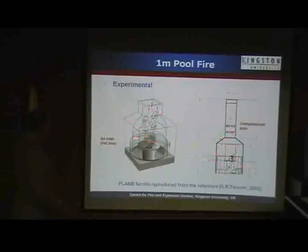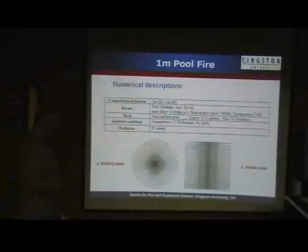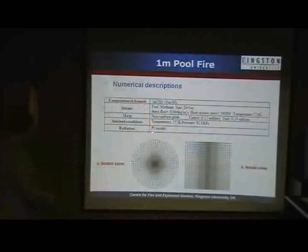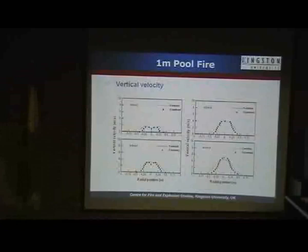They are using a grid size that's variable, obviously. So they really want to capture what's happening in the flame zone in this one-meter fire, and they use a different radiation model. Modelers like this know what P1 means. Here are their results — vertical velocity at different positions, moving up the flame. I think not so bad.